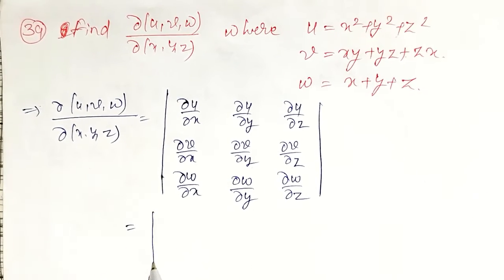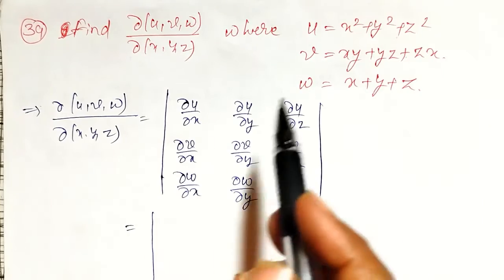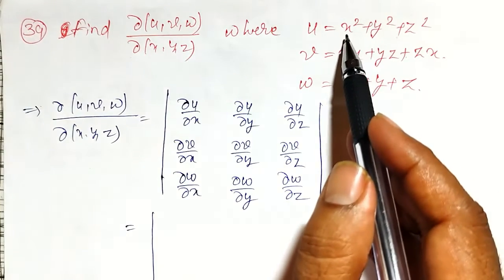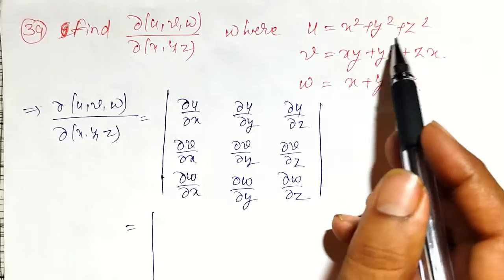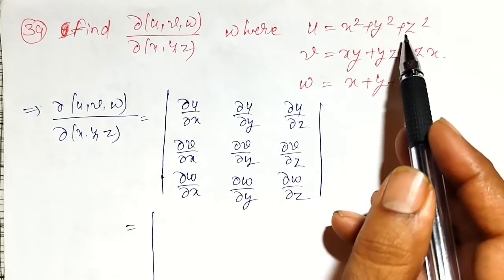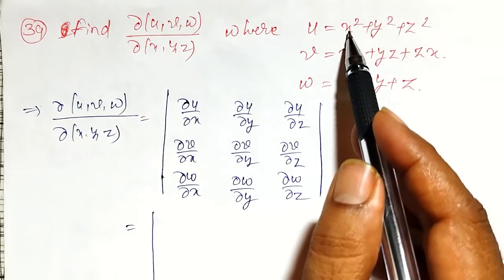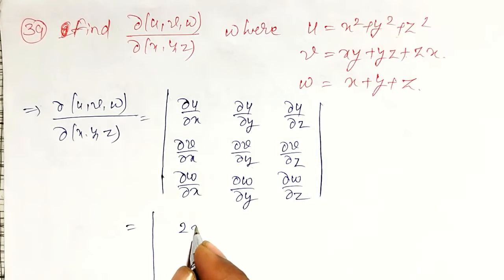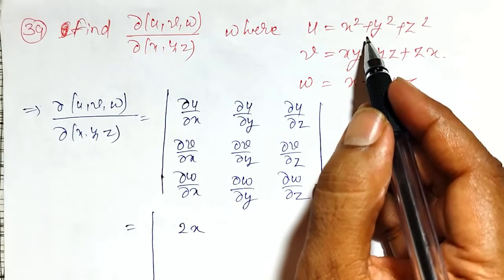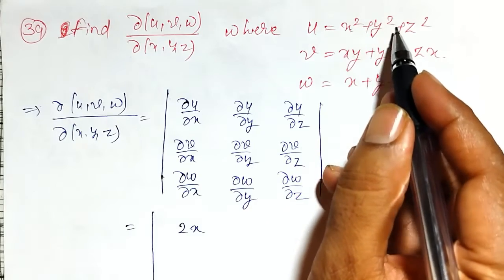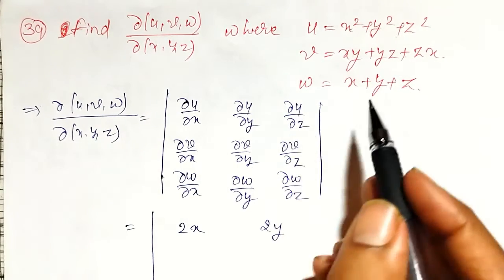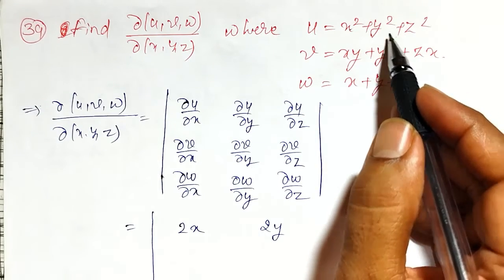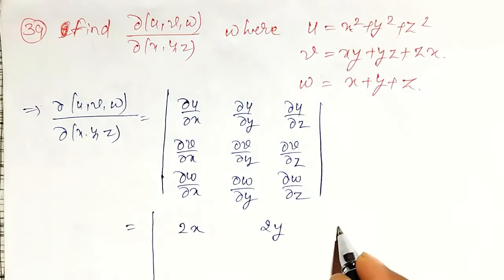Let me find out those partial derivatives. For u = x² + y² + z², differentiating with respect to x gives ∂u/∂x = 2x. Differentiating with respect to y gives ∂u/∂y = 2y. And ∂u/∂z with respect to z gives 0 + 0 + 2z = 2z.